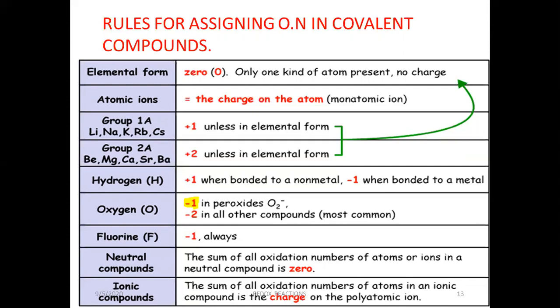The next rule covers group 1 atoms — lithium, sodium, potassium, rubidium, etc. These atoms have a plus 1 oxidation state unless in their elemental form, in which case they have zero. In all other cases, atoms belonging to the first group have plus 1 oxidation number. Group 2 atoms — beryllium, magnesium, calcium, strontium, barium, etc. — have plus 2 unless in elemental form.